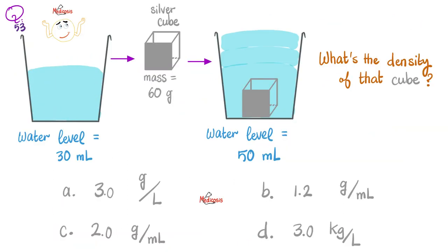Next, here is water alone. Its water level is 30 milliliters. Then we added a silver cube to the water, whose mass is 60 grams. After adding the silver cube to the water, the water level rose from 30 to 50 mLs. Question is, what's the density of that cube? As you know, density is mass over volume. I know the mass. How do I get the volume? It's the volume of water that was displaced. The volume of water displaced is the difference between these two numbers. It's 50 minus 30, which means the cube displaced 20 mLs of water.